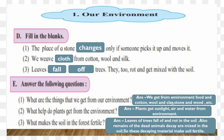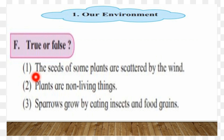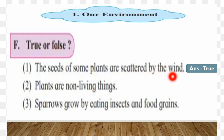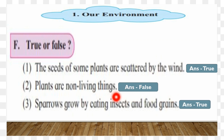True or False. First: the seeds of some trees are scattered by the wind - True. Second: plants are non-living things - False, because plants are living things. Third: sparrows grow by eating insects and food grains - True, sparrows eat insects and grains.